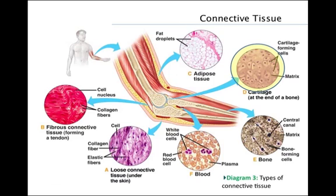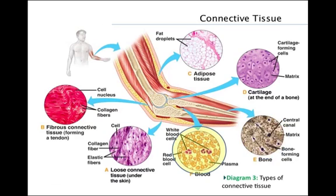Cartilage commonly surrounds the ends of bones, where it forms a shock-absorbing surface. It also supports the nose and ear and forms a cushioning disc between our vertebrae. Bone has a matrix of collagen fibers embedded in a hard mineral substance made of calcium, magnesium, and phosphate. Lastly, blood consists of red blood cells, white blood cells, and platelets suspended in plasma. It functions mainly in transporting substances from one part of the body to another, and also in immunity.